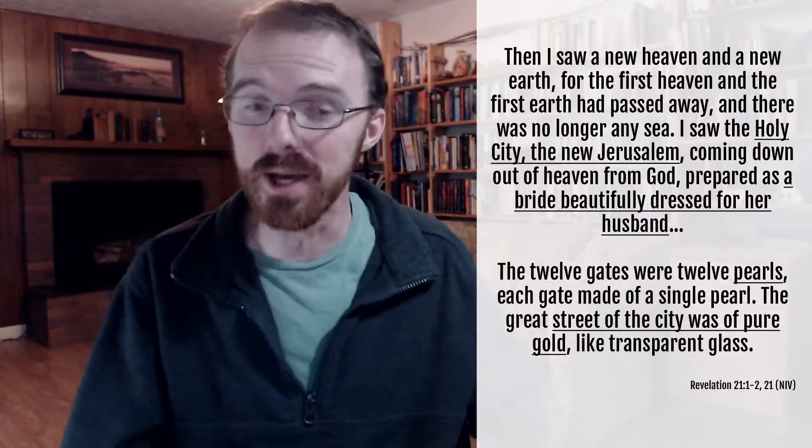The golden streets, the pearly gates are about a rebuilt Jerusalem. And this beautiful imagery was particularly important at the time Revelation was written because Jerusalem itself had just been destroyed and all of God's people were scattered to the winds. So this was a promise that what the people had seen was not the end, that it was not a lost golden age.